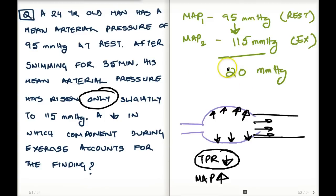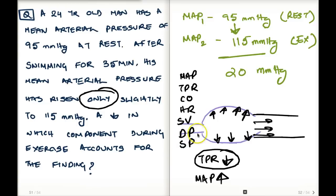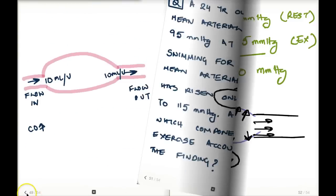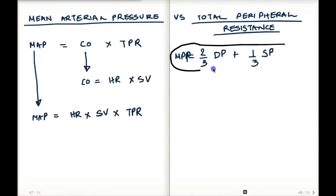When thinking about total peripheral resistance, it helps to write down all the equations and identify all the variables that can affect mean arterial pressure: total peripheral resistance, cardiac output, heart rate, stroke volume, diastolic pressure, and systolic pressure. These are the key components that influence mean arterial pressure.